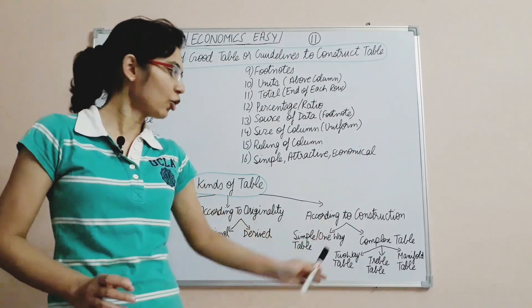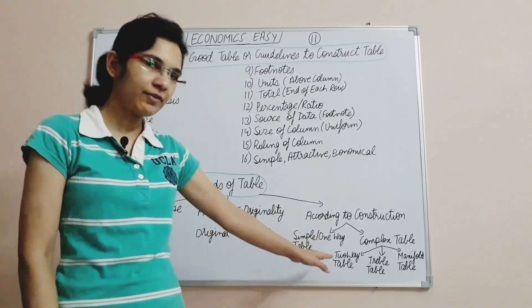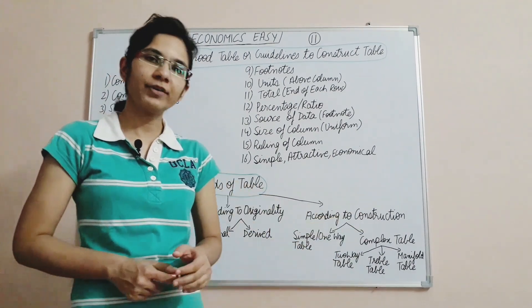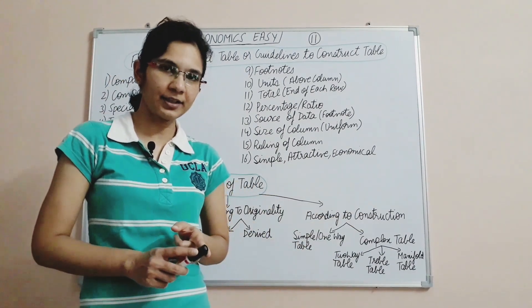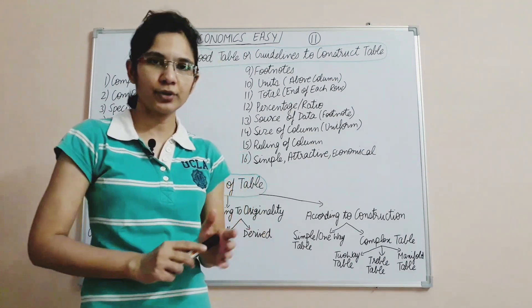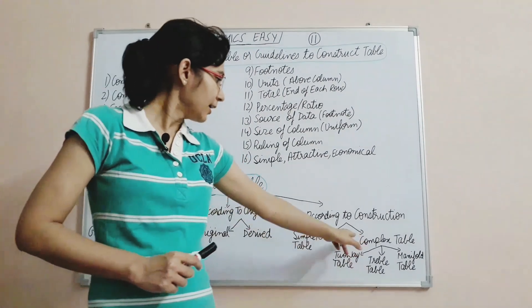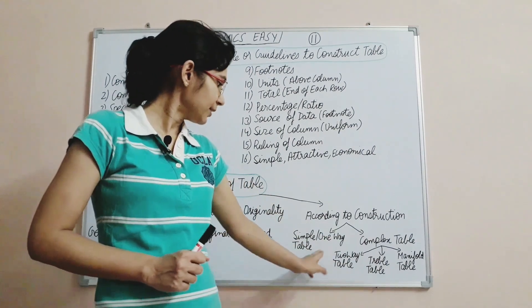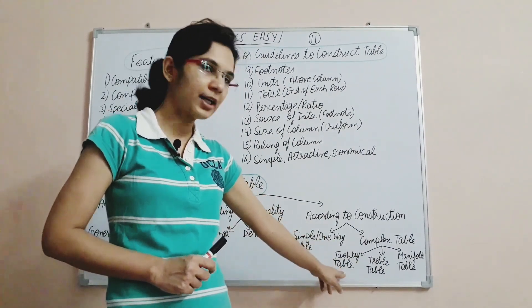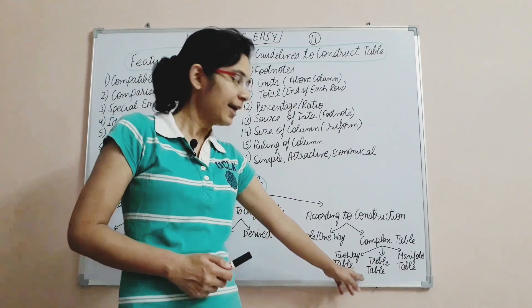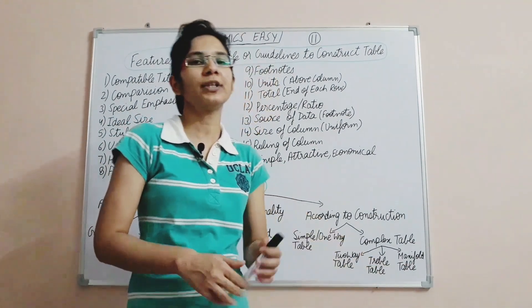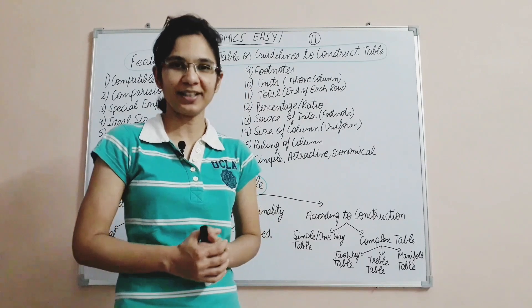Third comes according to construction: simple or one-way table, and complex table. A simple one-way table shows one characteristic of the data — for example, the number of students. In a complex table, there is a two-way table showing two characteristics, a triple table showing three characteristics, and a manifold table showing more than three characteristics of the data.